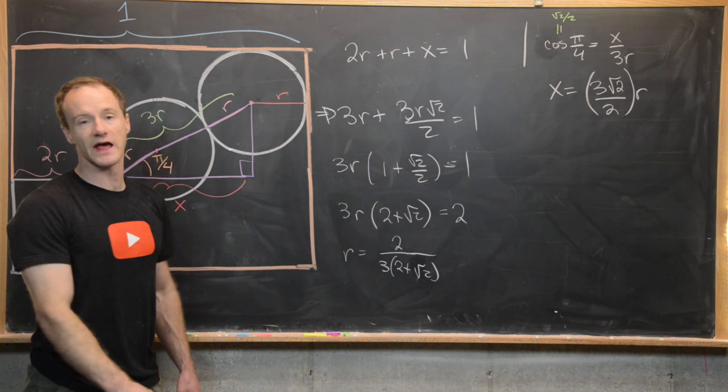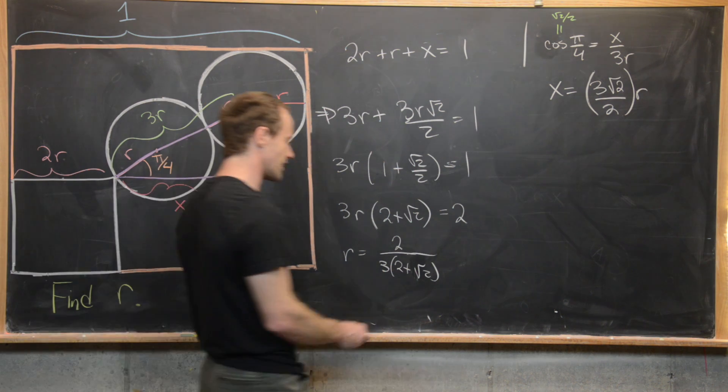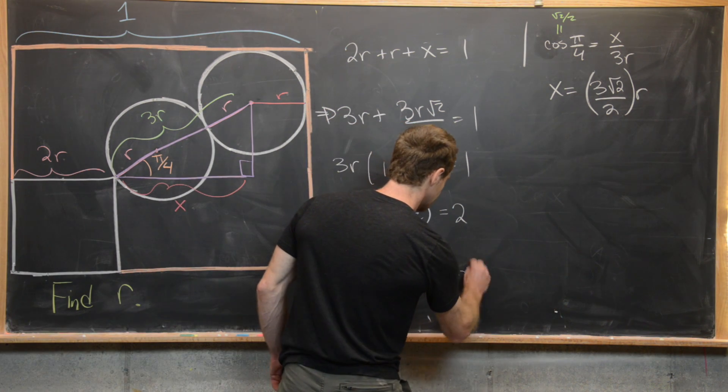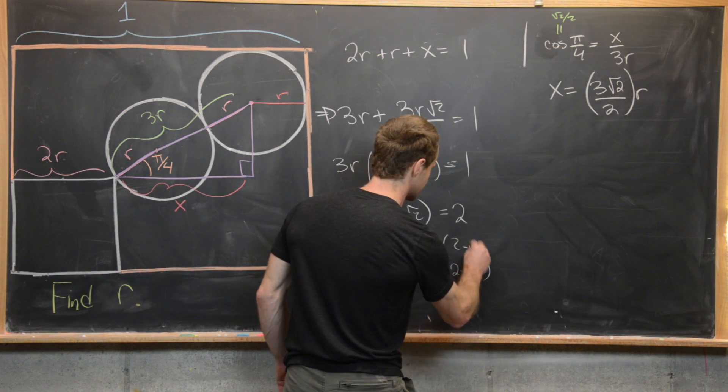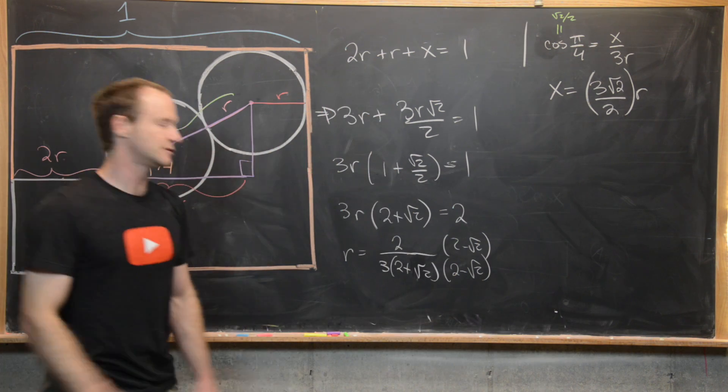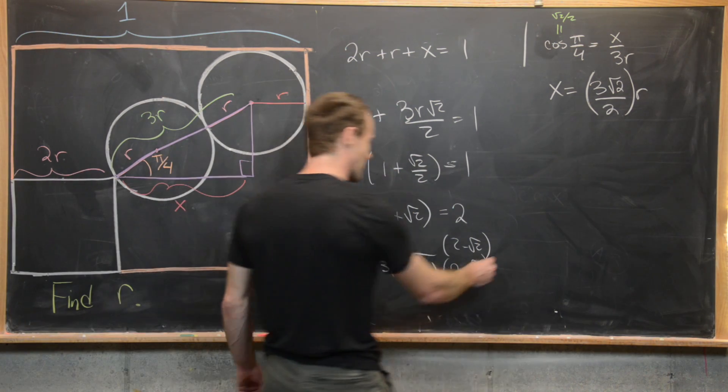And then if we want to, we can go ahead and rationalize the denominator here to make it look a little nicer. So maybe multiply by (2 minus √2) over (2 minus √2). So let's see what that gives us.